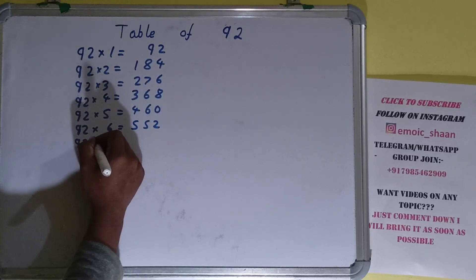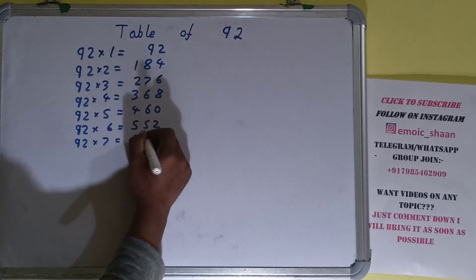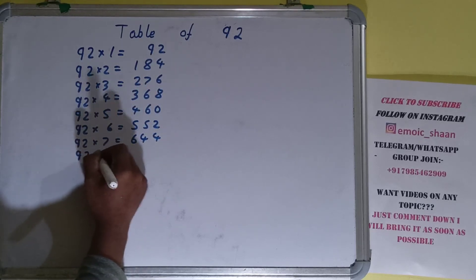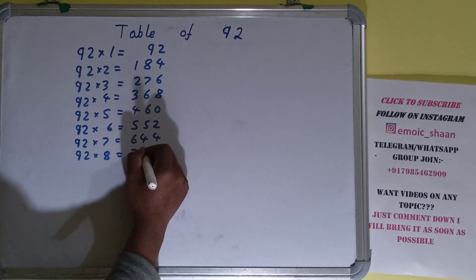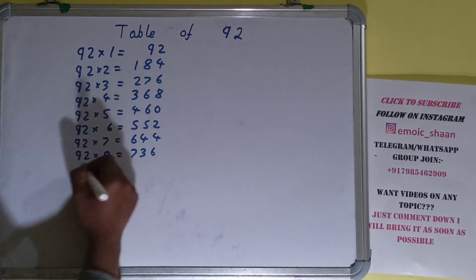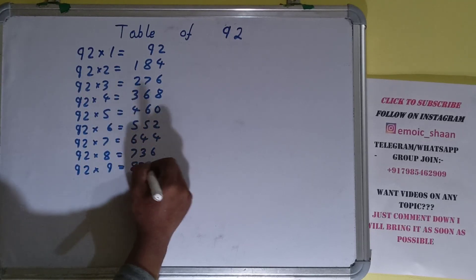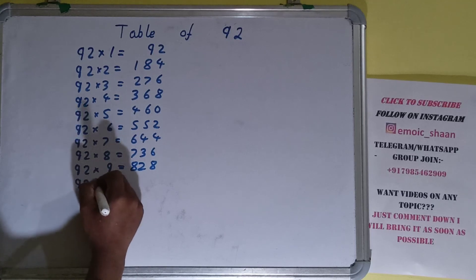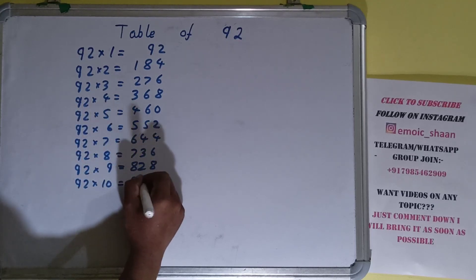92 into 7 is 644. 92 into 8 is 736. 92 into 9 is 828. 92 into 10 is 920.